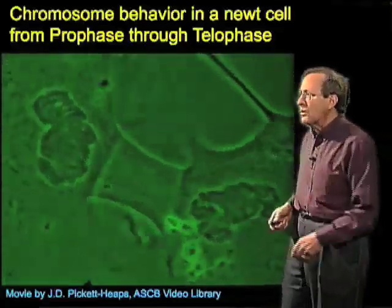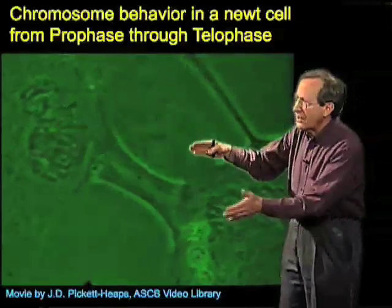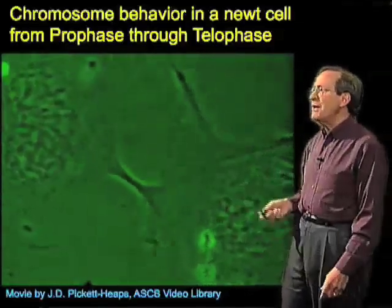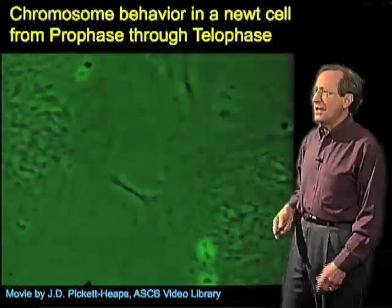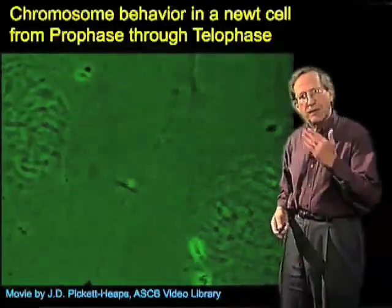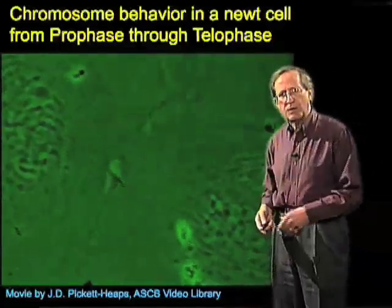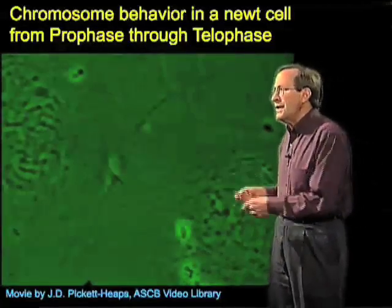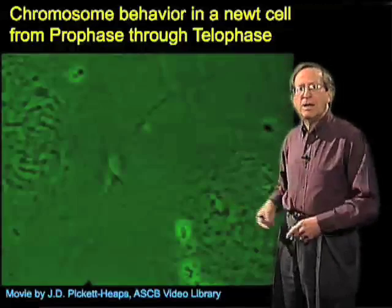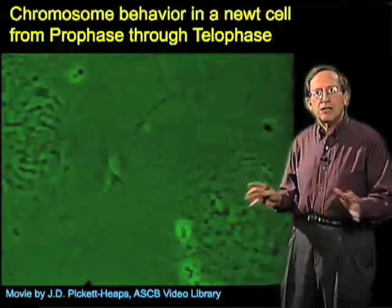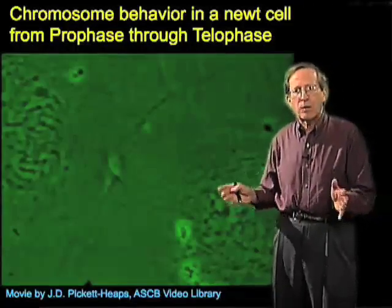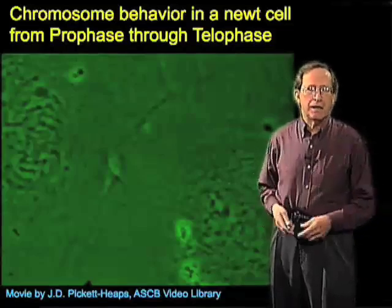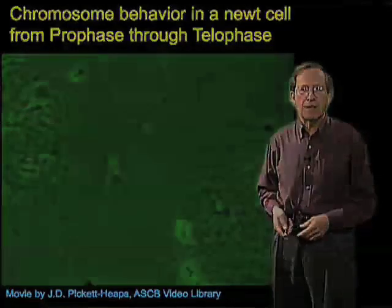Eventually anaphase will start. Anaphase is this process of ordered segregation, followed by cytokinesis where the cell pinches in in the middle in animal cells. In plant cells you build a wall between the two daughter cells instead. What this gives rise to then is two independent nuclei, each with a complete set of chromosomes, now divided into two distinct cells.